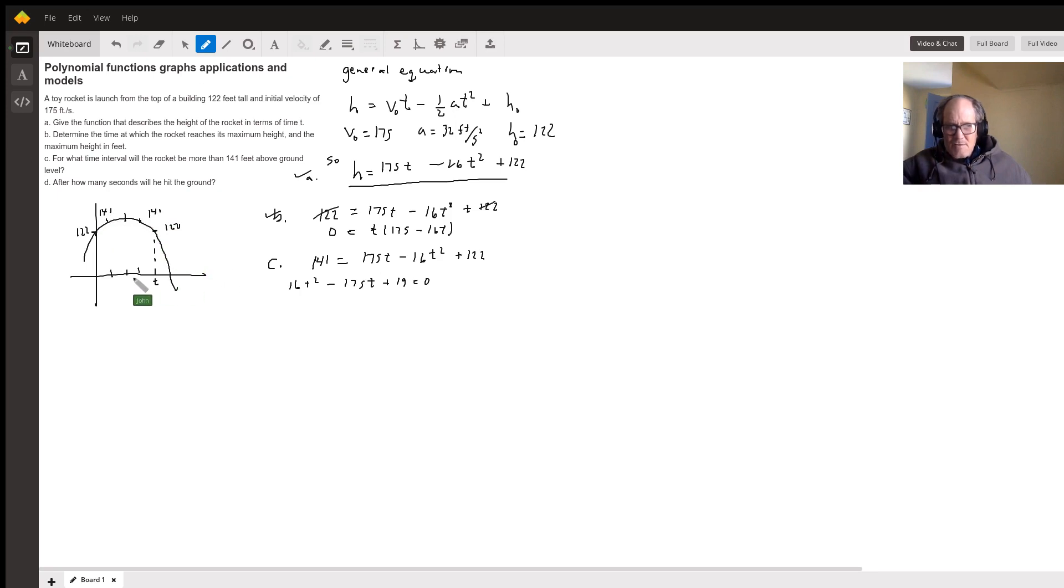And then subtract those two times, and you'll get that interval. After how many seconds will he hit the ground? Well, our height is zero when he hits the ground. So take a zero and plug it into your height, 175T minus 16T squared plus 122.